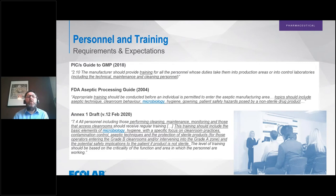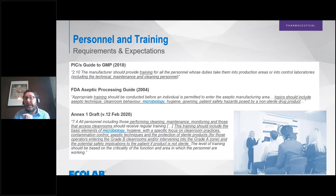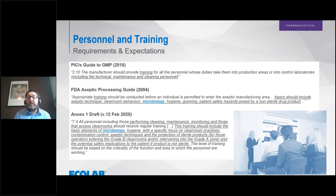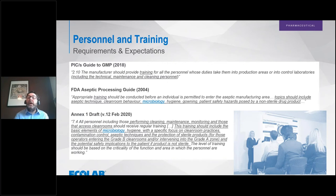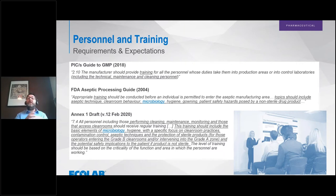When it comes to personnel training, the PICS Guide to GMP says the manufacturer should provide training for all personnel who go into production areas — including technical, maintenance and cleaning personnel. The FDA aseptic processing guide says appropriate training should be conducted, and gives topics including aseptic technique, clean room behavior, and microbiology. Microbiologists have a real part to play in making sure people have adequate microbiology knowledge to safely go into clean rooms. FDA also lists hygiene, gowning, and patient safety hazards posed by non-sterile drug products as part of the training package.